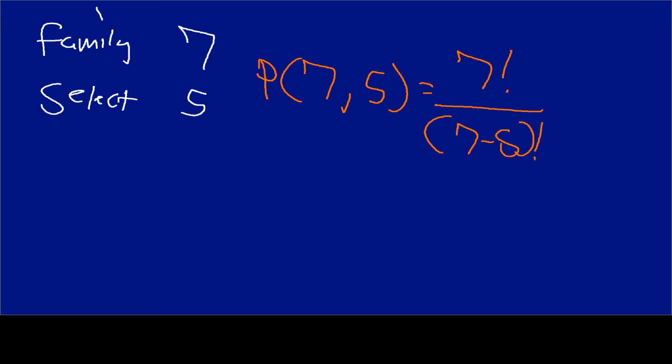So if I had to work this out, I would do seven times six times five times four times three times two times one. You could probably tell I don't need to put the one. I'm just trying to be thorough for people who may not be as comfortable with mathematics. And then in the bottom, we have seven minus five. So that's going to be two. So I'm going to have two, one, like that.